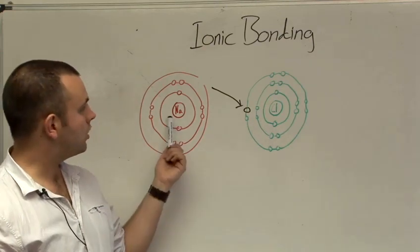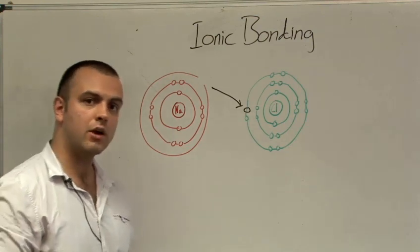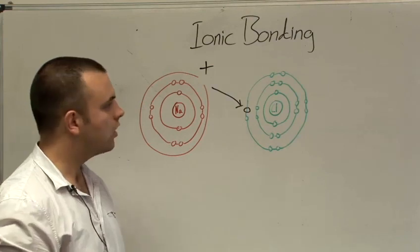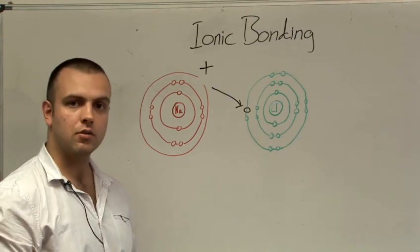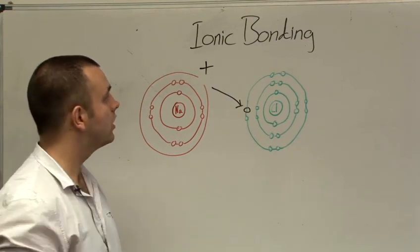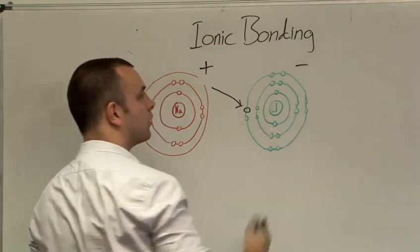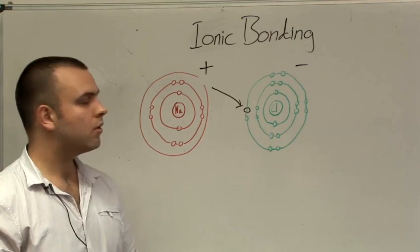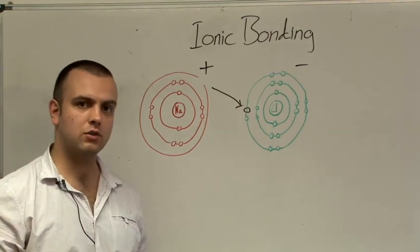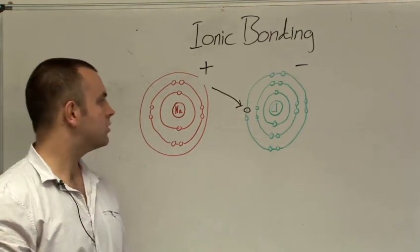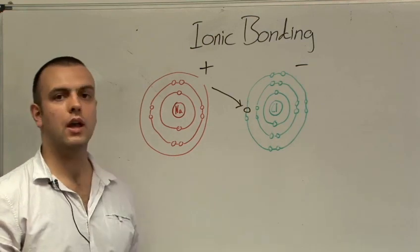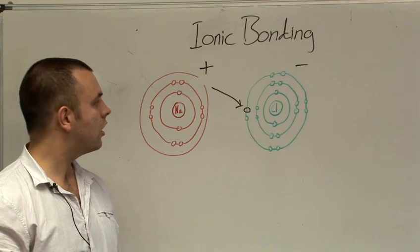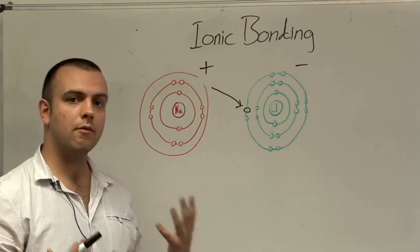However, because sodium has lost an electron, it now has more protons than electrons. So it has an overall charge of plus one. Chlorine similarly has gained an electron, so it's gained a negative charge. And so it now has an overall charge of minus because it has more electrons than protons. Positive charges are attracted to negative charges and vice versa. This means that sodium and the chlorine atoms, or ions as they are now because they've gained a charge, will bond together to form a very strong bond.